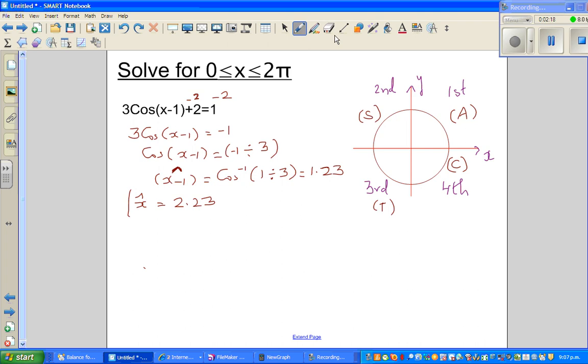2.23 will not make sense. So let us put, sorry, x minus 1, I will keep it as it is, is equal to, we want this in your first quadrant. So x minus 1, your reference angle is 1.23.